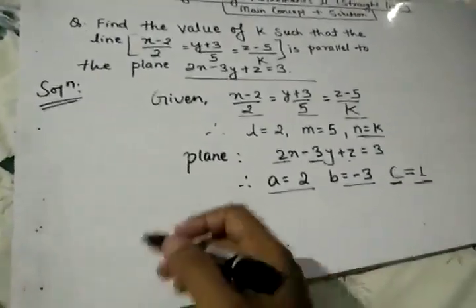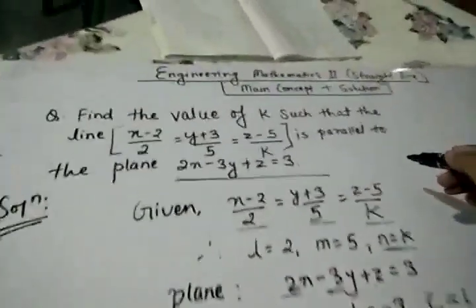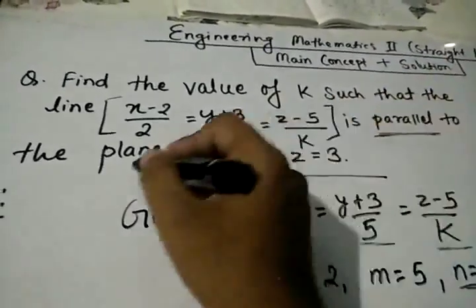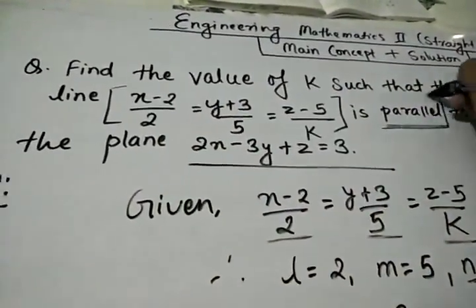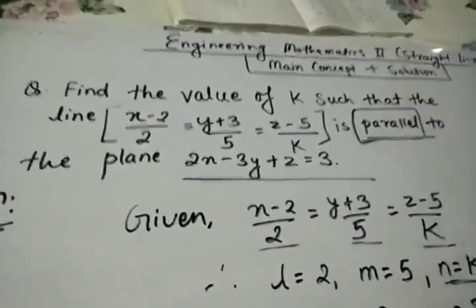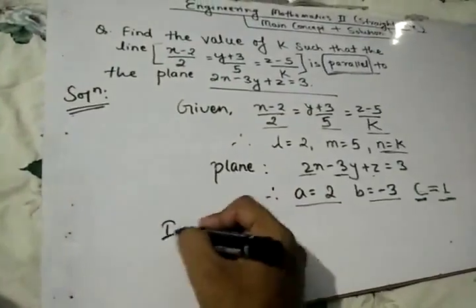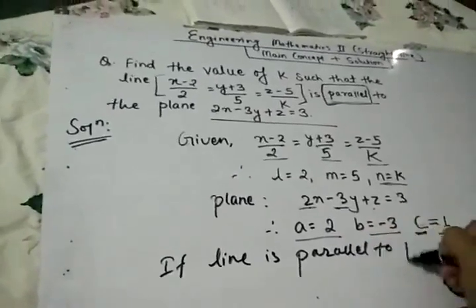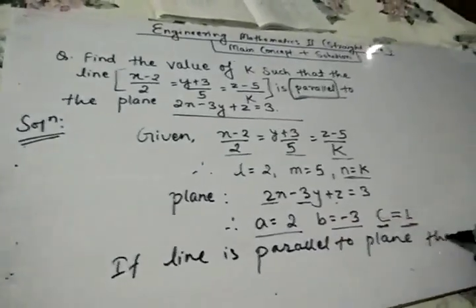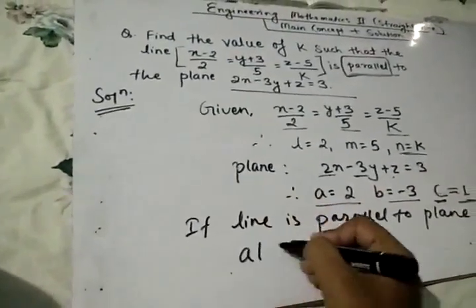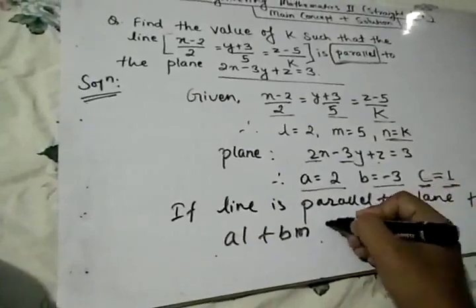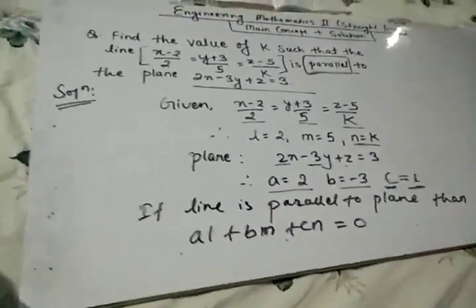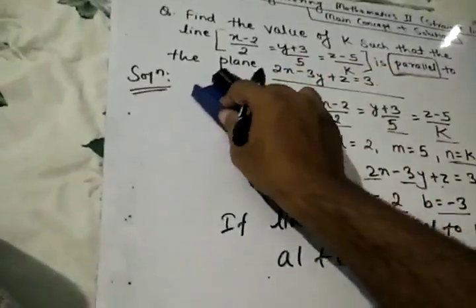Now to solve this, we know that if the line is parallel to the plane, we have a condition. If line is parallel to plane, then AL + BM + CN = 0. Using this condition we will find the value of K.